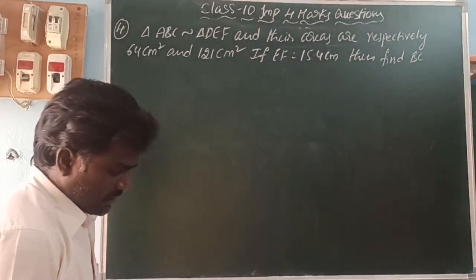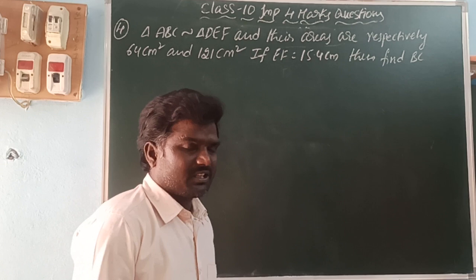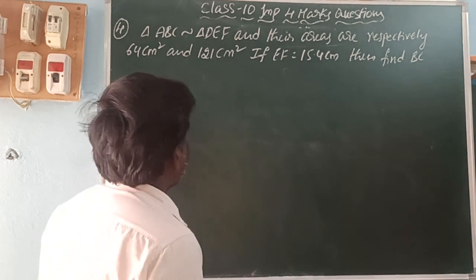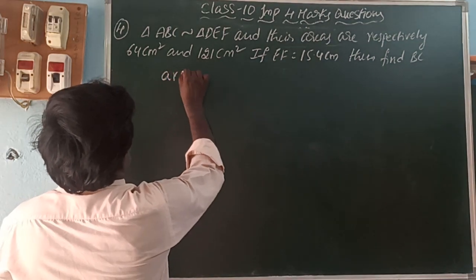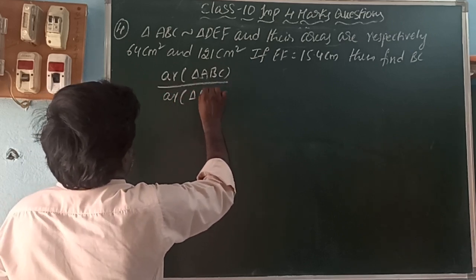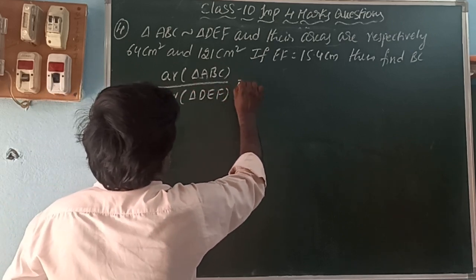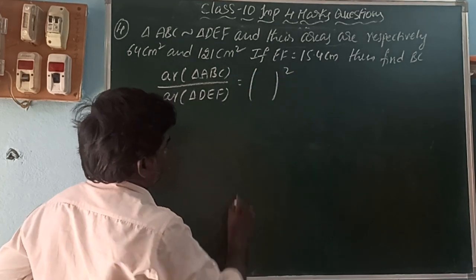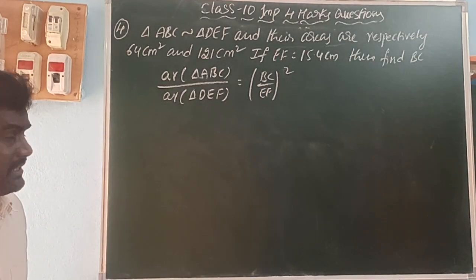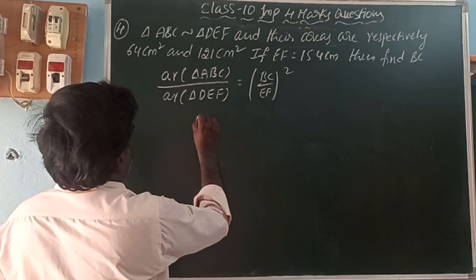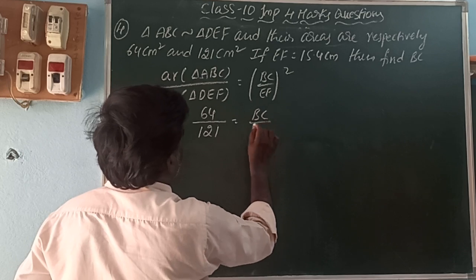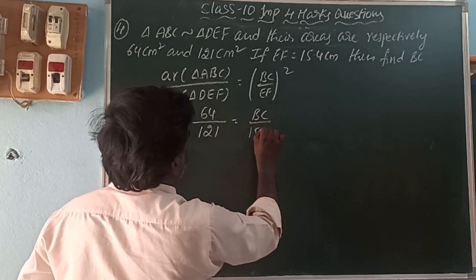By Theorem 8.6, the ratio of areas of two similar triangles equals the square of the ratio of their corresponding sides. So area of triangle ABC divided by area of triangle DEF equals (BC/EF)². That is 64/121 = (BC/15.4)². Writing 64 as 8² and 121 as 11², we get (8/11)² = (BC/15.4)².